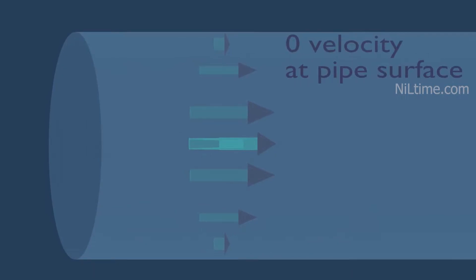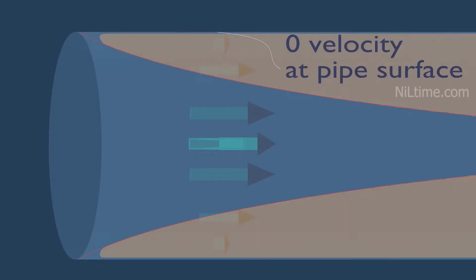Consider a fluid entering a circular pipe at a uniform velocity. A fluid in motion comes to a complete stop at the surface and assumes a zero velocity relative to the surface. That is, a fluid in direct contact with a solid sticks to the surface and there is no slip. This is known as the no-slip condition. The fluid property responsible for the no-slip condition and the development of boundary layer is called viscosity.